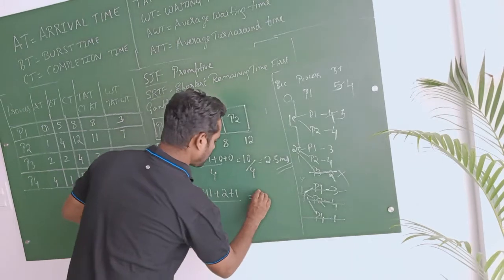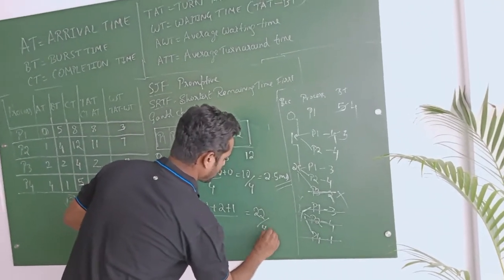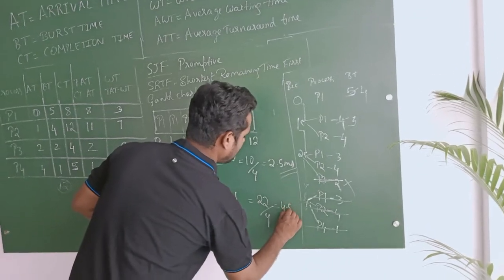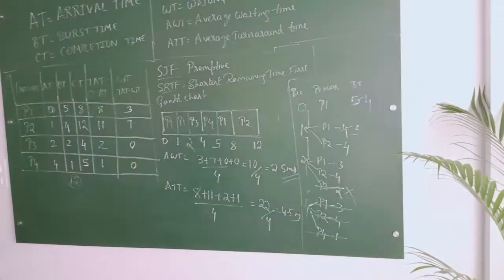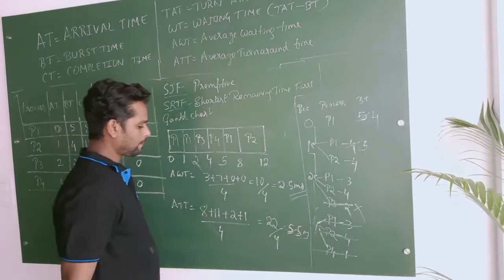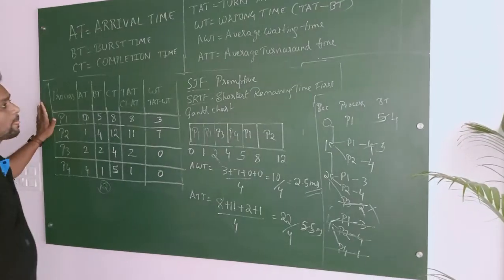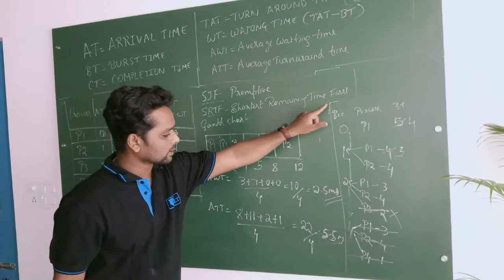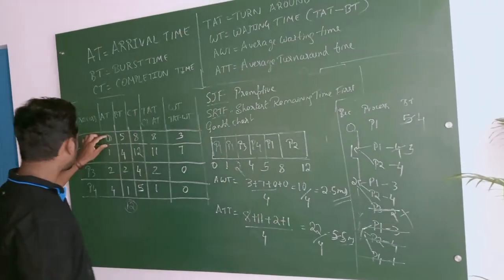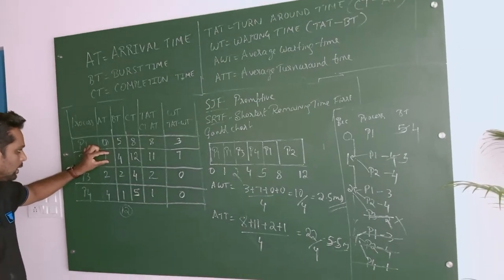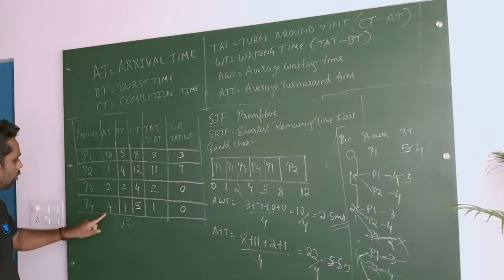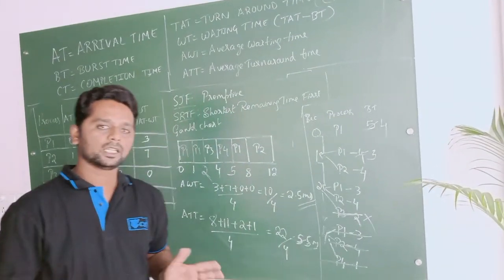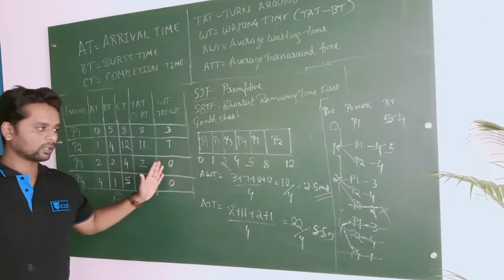Average waiting time = (3 + 7 + 0 + 0) / 4 = 10 / 4 = 2.5 milliseconds. Average turnaround time = (8 + 11 + 2 + 1) / 4 = 22 / 4 = 5.5 milliseconds. This is SJF preemptive, also called Shortest Remaining Time First. Remember: execute the first process until the second process arrives, repeat until the last process arrives, then go SJF non-preemptive.